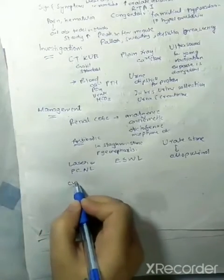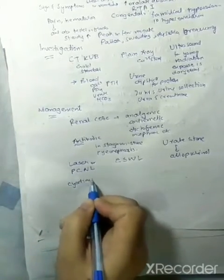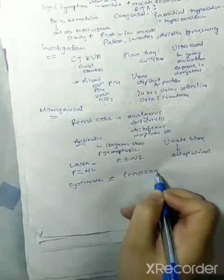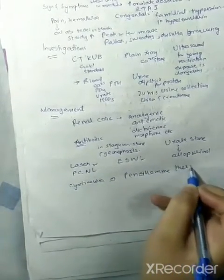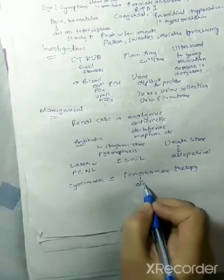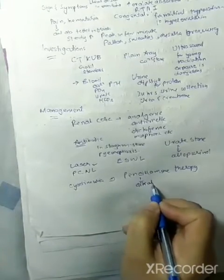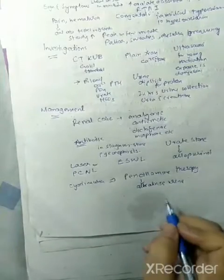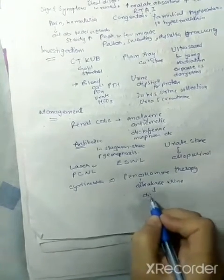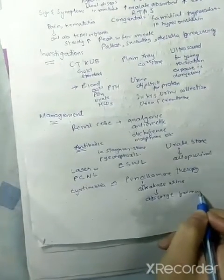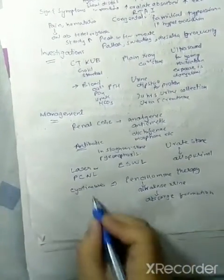For urate stones we will give allopurinol so that the urate level goes down. If there is cystinuria, we will give penicillamine therapy. This alkalizes urine which discourages the formation of urate stone. So we will give penicillamine for cystinuria.